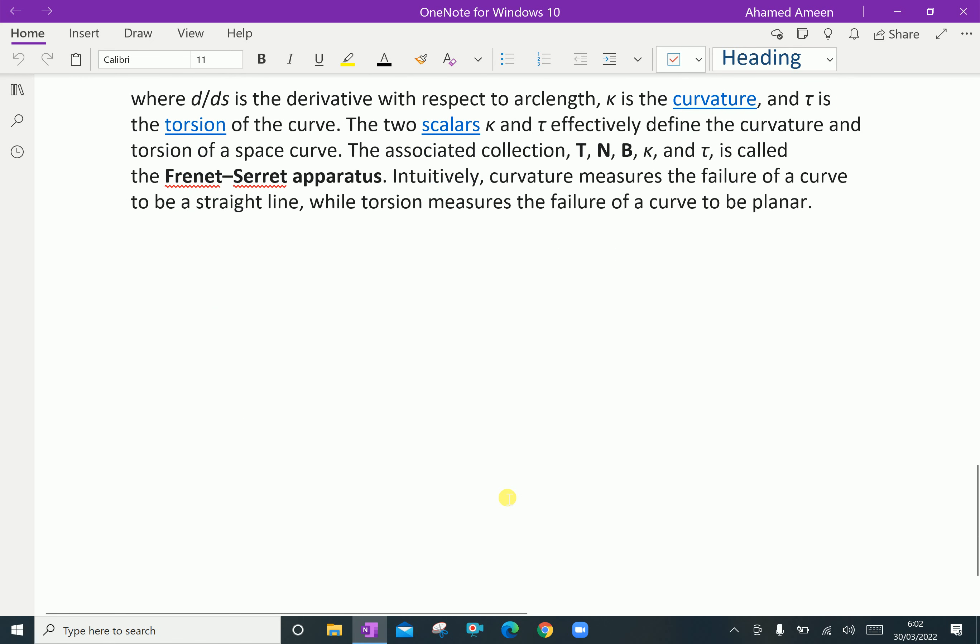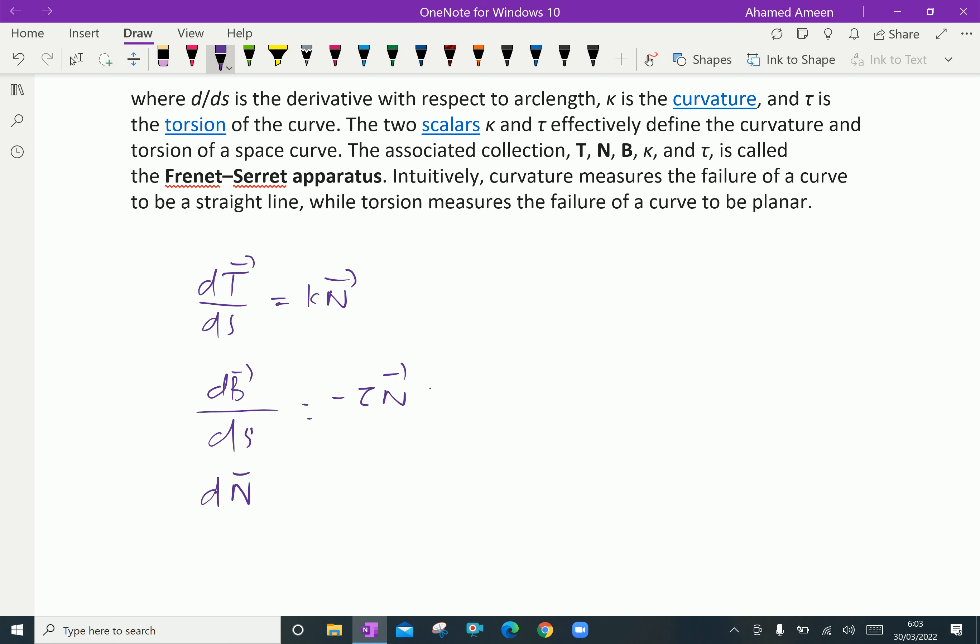We will discuss further about the Frenet formulas. Here, dT/ds equals κN. The second one, dB/ds equals minus τ times the normal vector. And the normal vector, dN/ds equals minus κT plus τB.